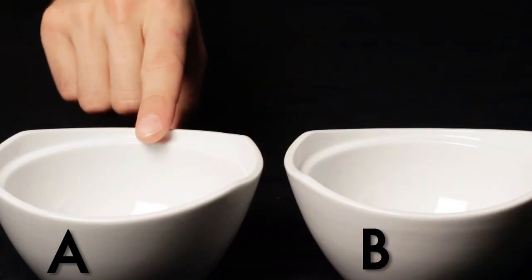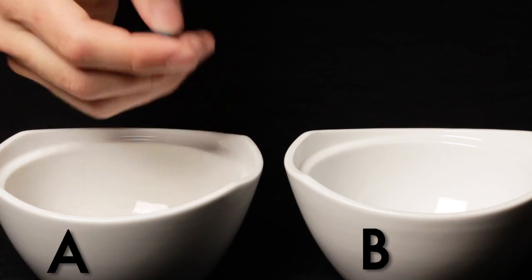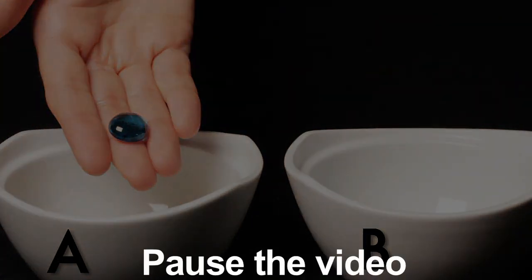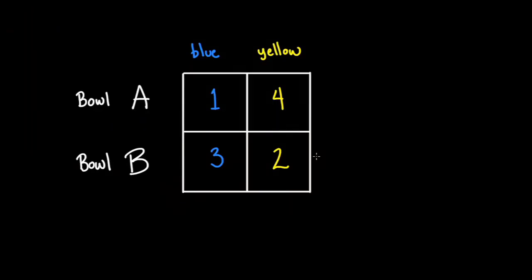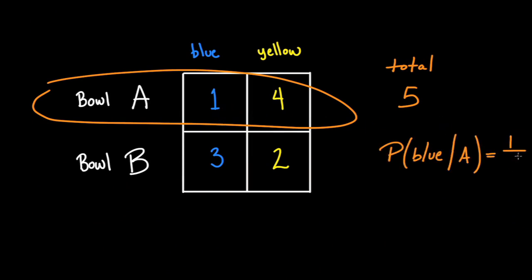What if you must draw from bowl A? What's the probability of drawing a blue marble given that you draw from bowl A? Let's go back to the table and consider only bowl A. Bowl A contains five marbles, of which one is blue, so the probability of picking a blue one is one in five.